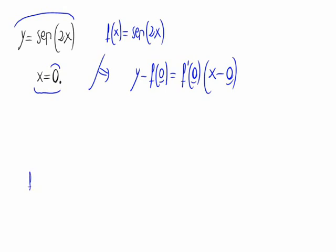So, let's calculate f of 0 down here. This is the sine of 2 times 0, which is sine of 0, which is 0.